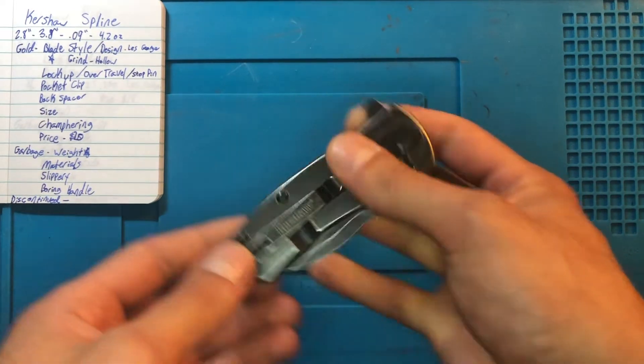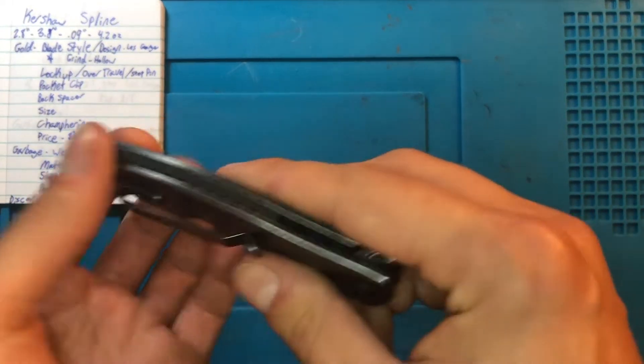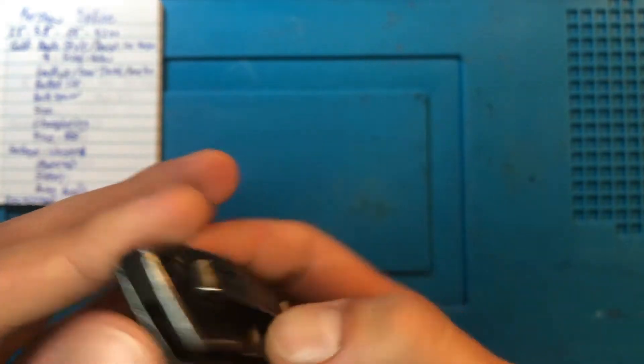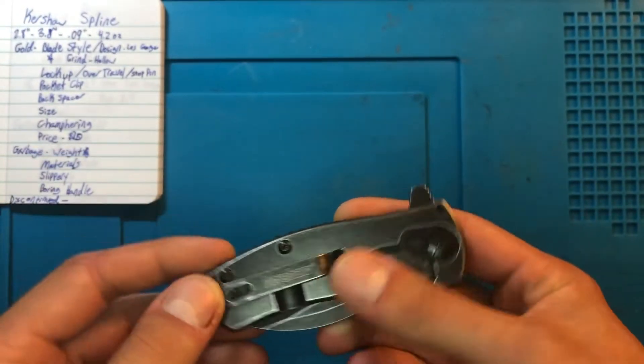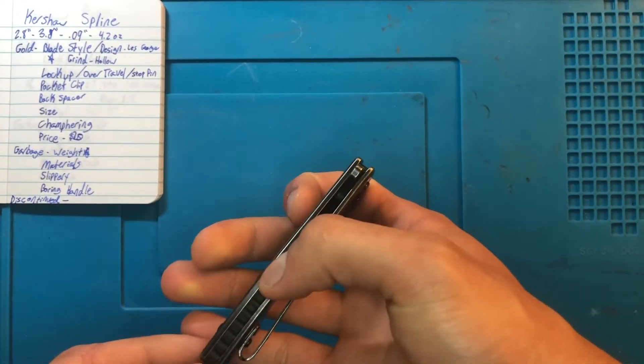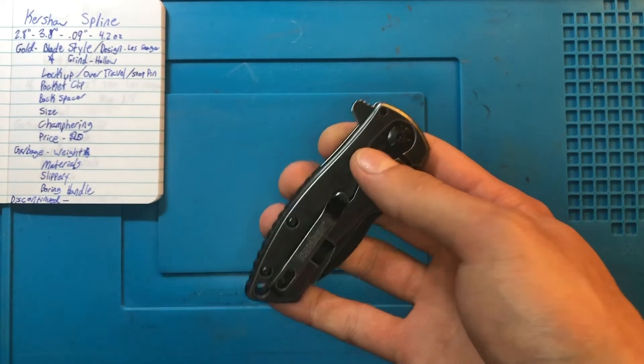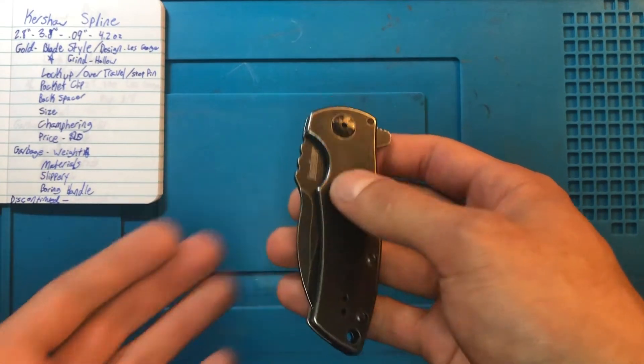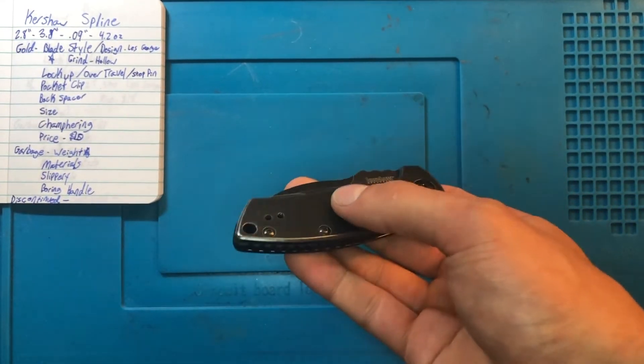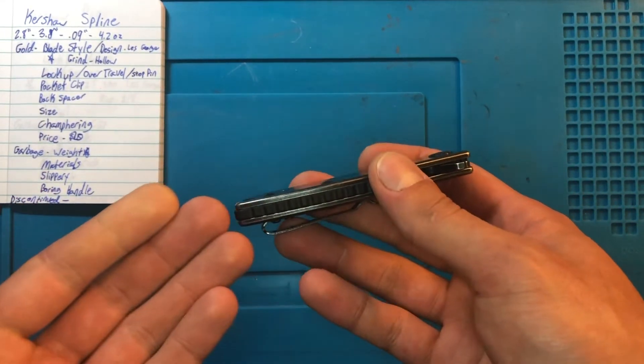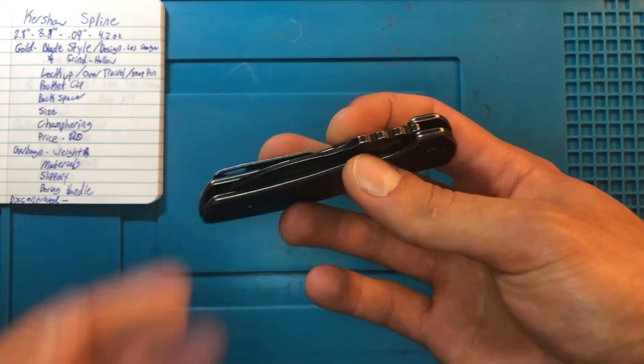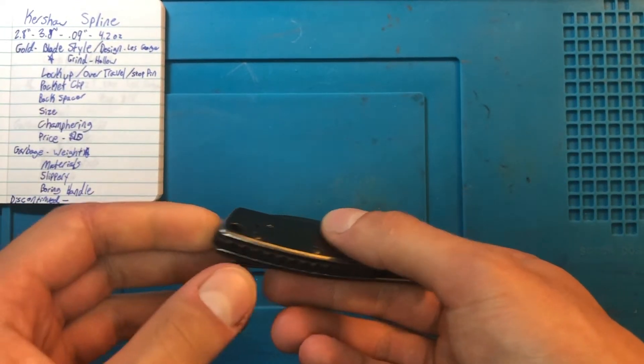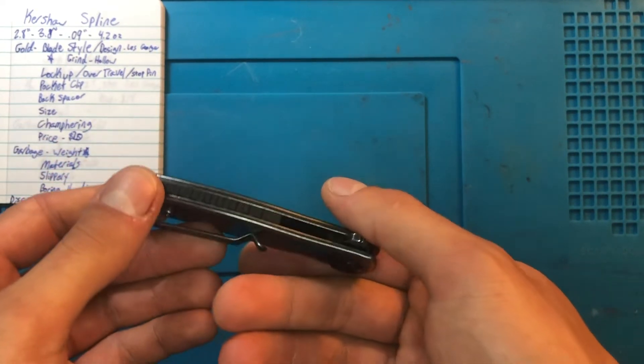Another thing is this backspacer, which again, in this budget of a knife, not something that you always have to do, but it's there. I believe it's FRN. There's a little bit of texturing involved just to help give you a little bit more secure grip. And I personally prefer backspacers to a flow through design just because it gives me a little bit of peace of mind with the knife being completely covered.